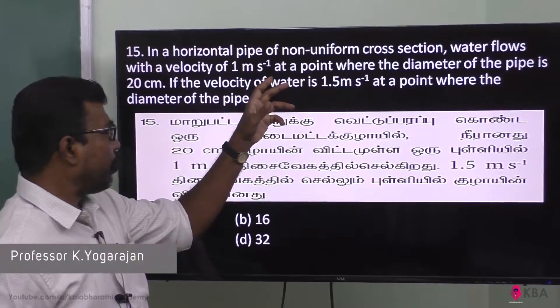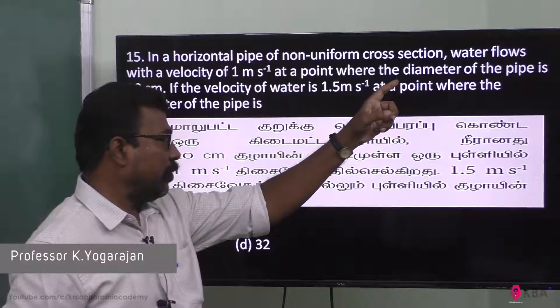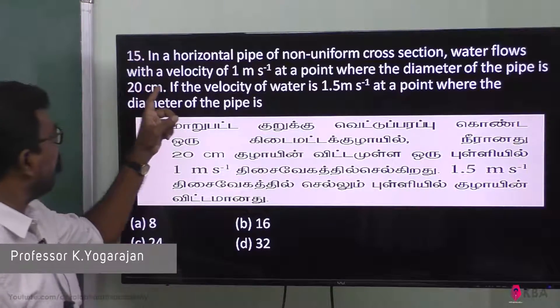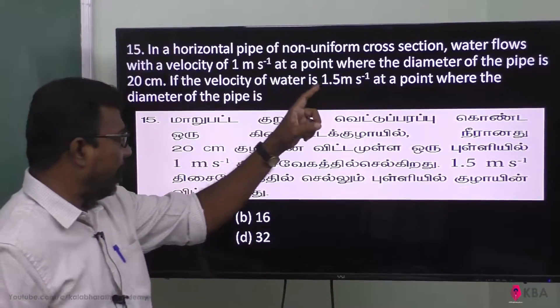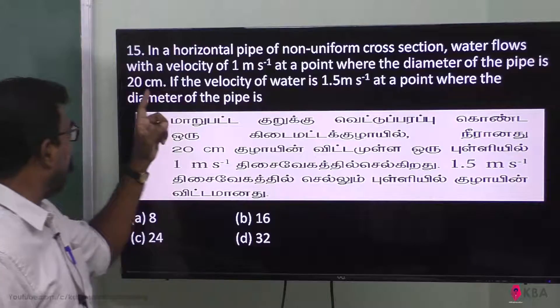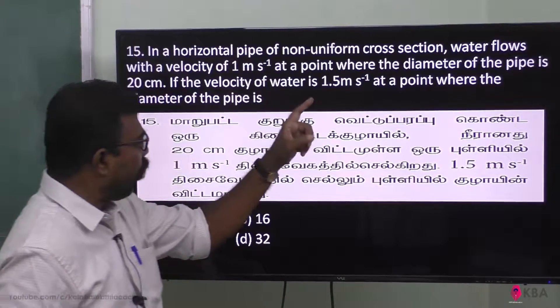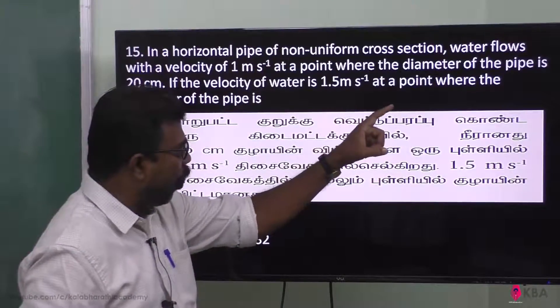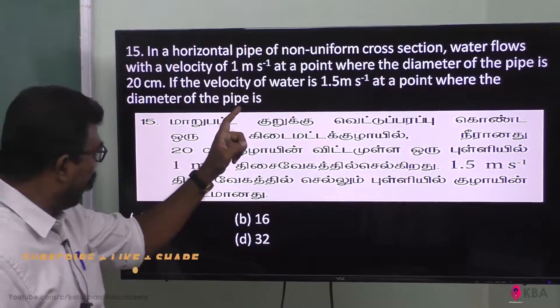In a horizontal pipe of non-uniform cross-section, water flows with the velocity of 1 meter per second at a point where the diameter of the pipe is 20 centimeter. If the velocity of the water is 1.5 meter per second at a point, where the diameter of the pipe is...